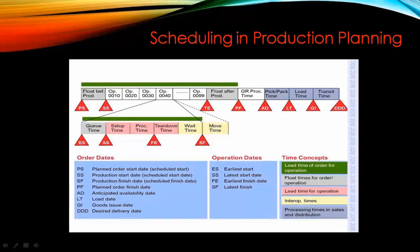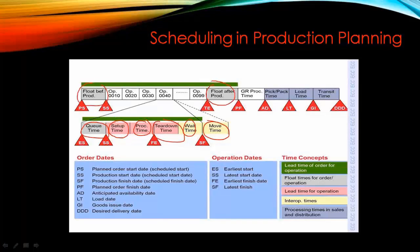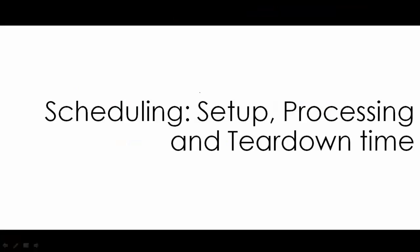With regards to scheduling and capacity planning, the system plans using all the different setup values defined in the material master and the routing. For example, in the routing you can define setup time, processing time, tear down time, wait time, and move time for each operation. These times are taken into account when doing capacity planning or scheduling. We'll also talk about the scheduling margin key in a moment.